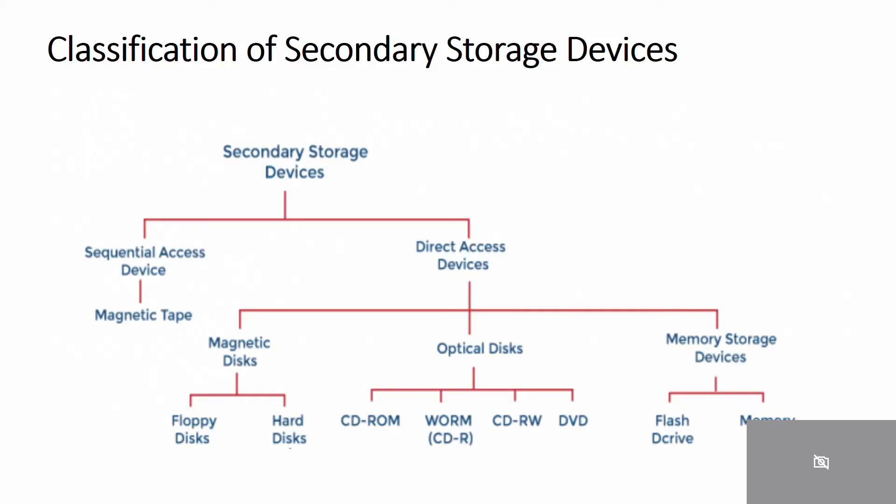Secondary storage devices are classified mainly into two parts: sequential access devices and direct access devices. Magnetic tape is an example of a sequential access device, while all other secondary storage devices are classified as direct access devices.